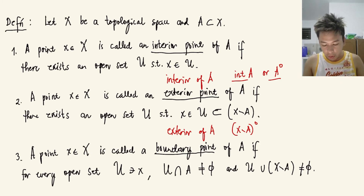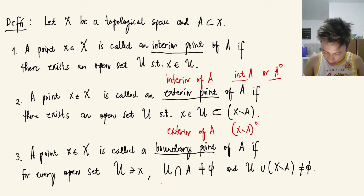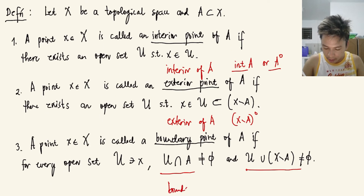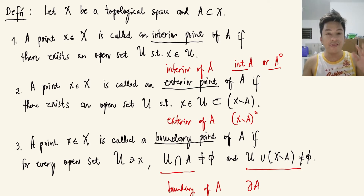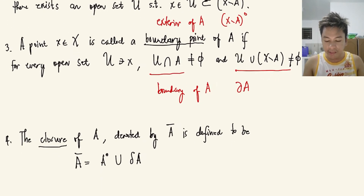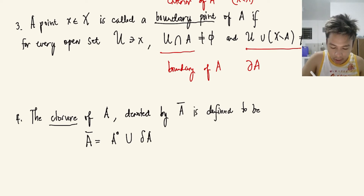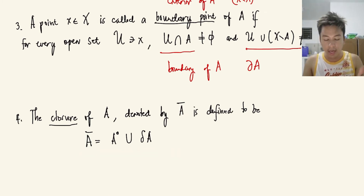A point x is called a boundary point of A if for every open set U containing x, the intersection of U and A is not empty, and the intersection of U with X minus A is also not empty. The collection of all boundary points is called the boundary of A, denoted by a symbol resembling a partial derivative in calculus. From these three definitions we introduce a fourth: the closure of A, which is defined as the union of the interior and the boundary of A.